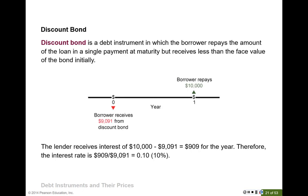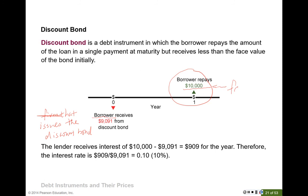Now let's look at the discount bond. At the beginning, the borrower receives $9,091 from the discount bond. The borrower here is the company — the firm that issues the discount bond — because the firm needs to borrow money to finance their project. After one year, the firm will repay $10,000 to the lenders. This $10,000 is normally called the face value.